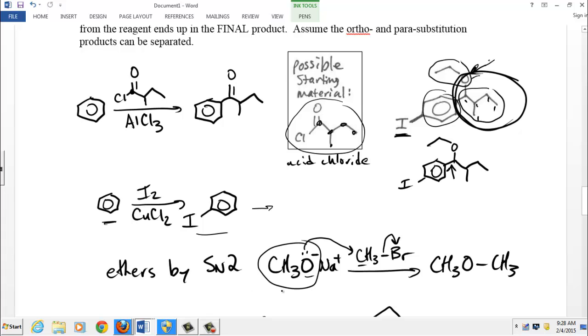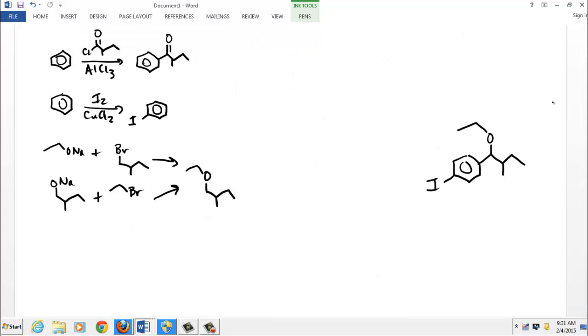So now we need to sequence them together in the right order. Here are the reactions on the left. Here's the final product on the right. We need to put these in the right order. Well, you know, we got that hint that we can use this acid chloride. So we know we got to put that reaction in place. And of course, the iodine's got to go in place by this reaction. And then we have the ethers. And we have choices there. We don't have to do both.